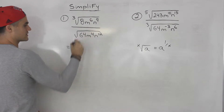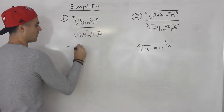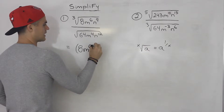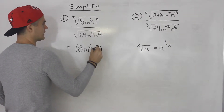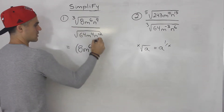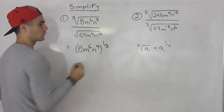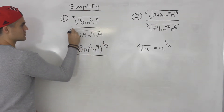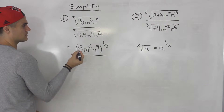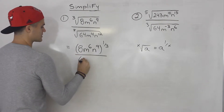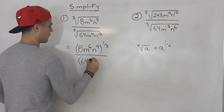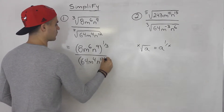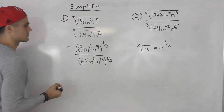So the third root of all of this — we could take 8m to the 6, n to the 9 — and that is all going to go to the power of 1 over 3. Then over here we have a square root, so there's like a 2 here, so 64m to the 4, n to the 12 will all go to the power of 1 over 2.